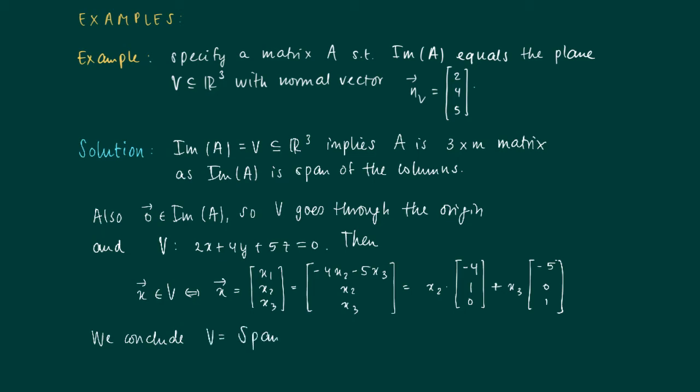Well, these vectors can be expressed as a linear combination of minus 4, 1, 0 and minus 5, 0, 1. So this means that V is the span of 2 vectors.